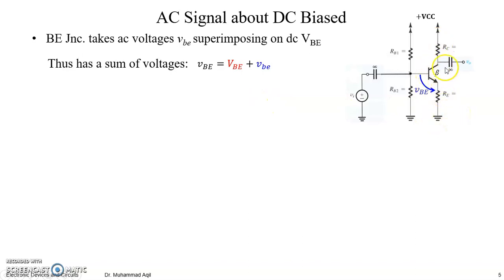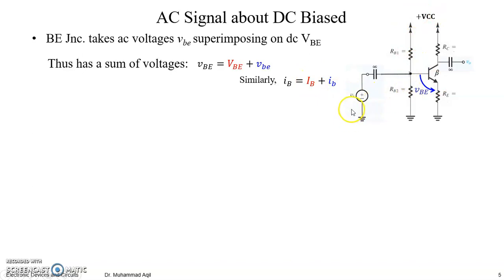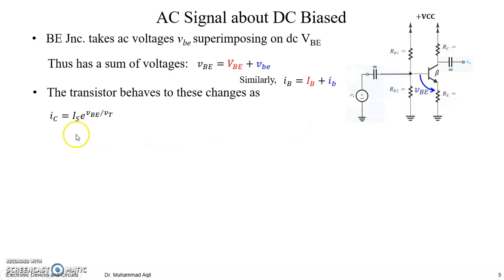We can then find the currents and voltages on the output side and ultimately find the value of V-out. Similarly for the base current: a DC current is set by the DC supply, then the AC variations produce an AC current, and both of these superimpose together to give a total base current that varies due to the AC variations. The transistor will behave according to its basic equation.